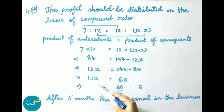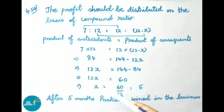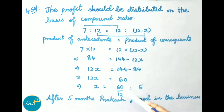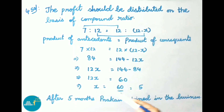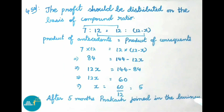Since 12 is multiplying, transposing it becomes dividing: X equals 60 by 12, that is 5. Therefore, after 5 months, Prakash joined in the business.